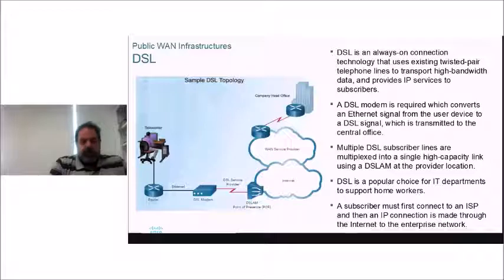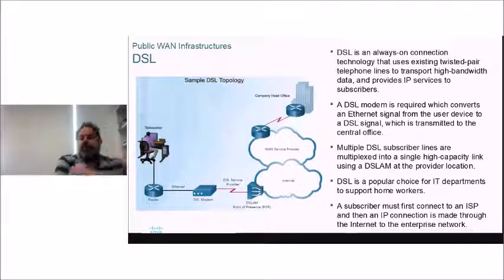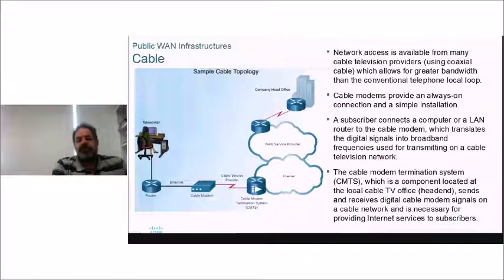DSL (Digital Subscriber Line) uses existing twisted-pair cables and enables much higher bandwidth than was previously possible. A DSL modem converts an Ethernet signal from a user device to a DSL signal transmitted to the central office. Multiple DSL subscriber lines are multiplexed into a single high-capacity DSLAM (DSL Access Multiplexer). DSL is a popular choice for IT departments to support home networkers. The subscriber connects to an ISP and an IP connection is made through the internet to the enterprise — a VPN is a solution there.